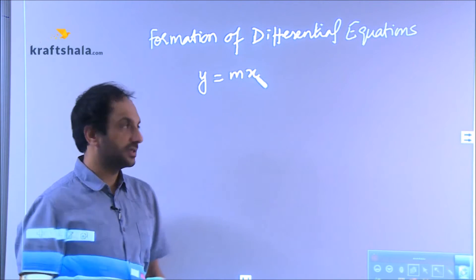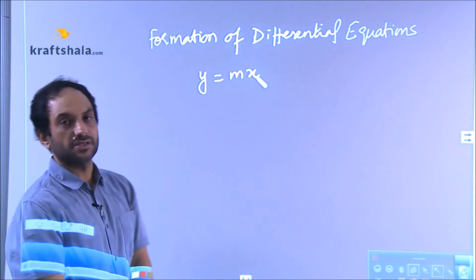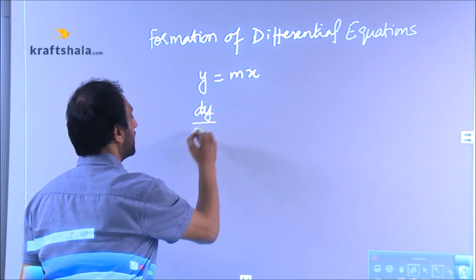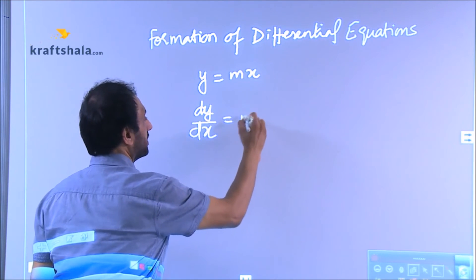So what we do for that? We have one equation, Y is equal to MX. And we differentiate it, dy by dx. That is M.